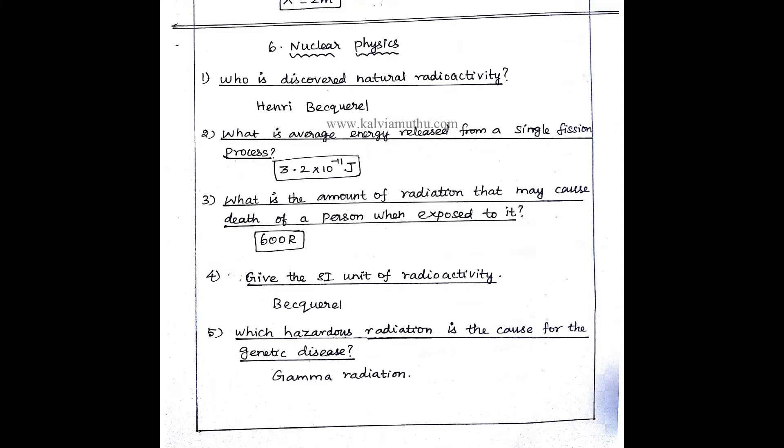Next question. What is the amount of radiation that may cause the death of a person when exposed to it? 600R. 600R radiation. That is the amount of radiation.